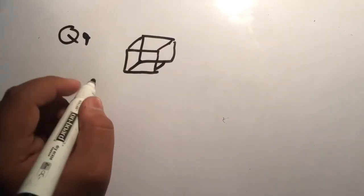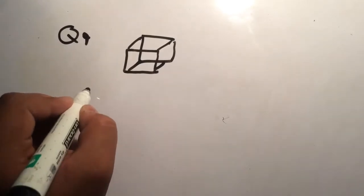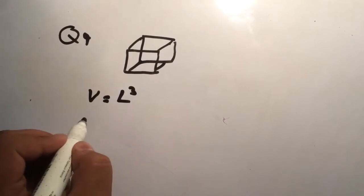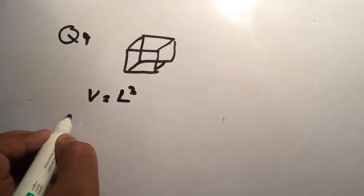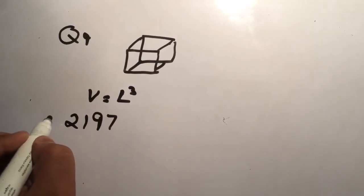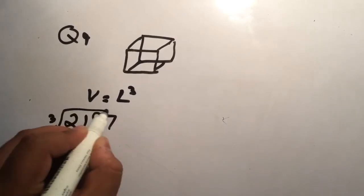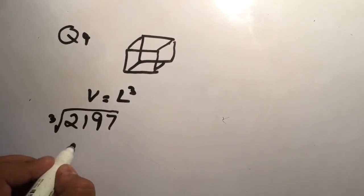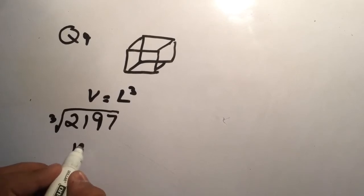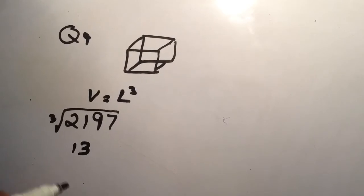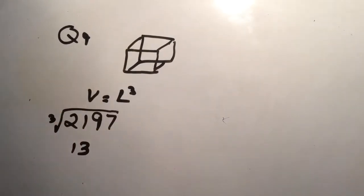So this is the cube box. If its volume is given, we have to firstly find its length. So volume equals to L cube. The volume given is 2197. We will take the cube root of it to find L. Cube root is 13.